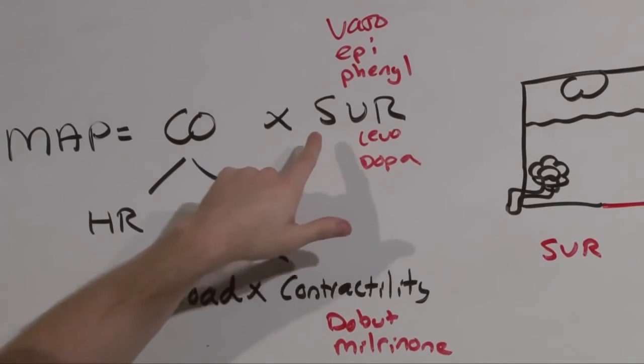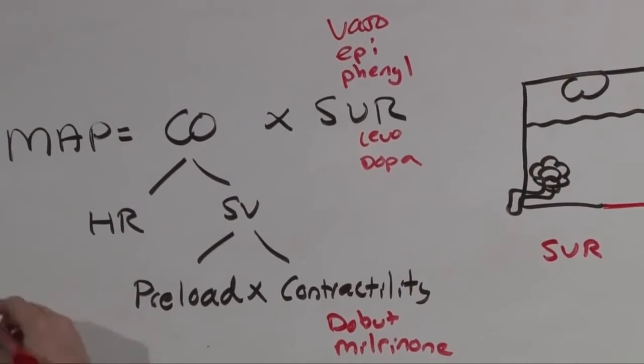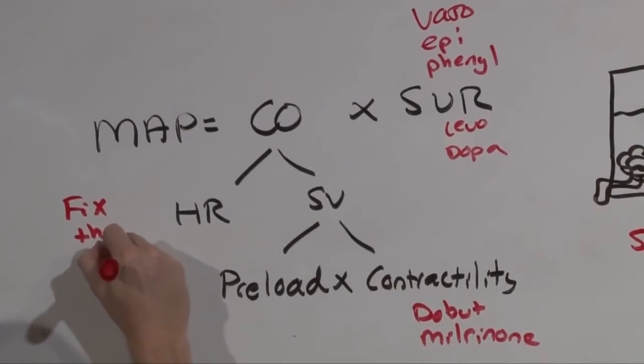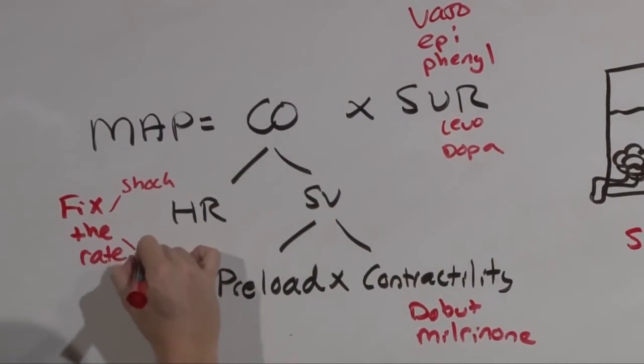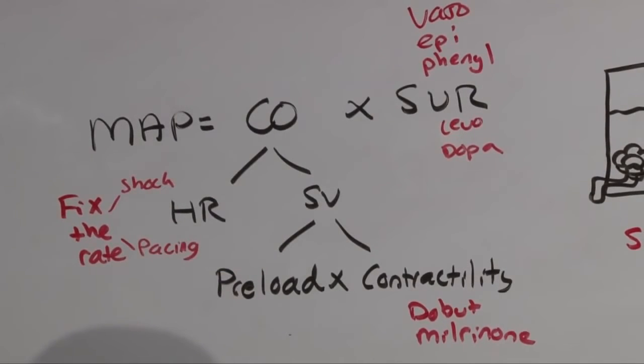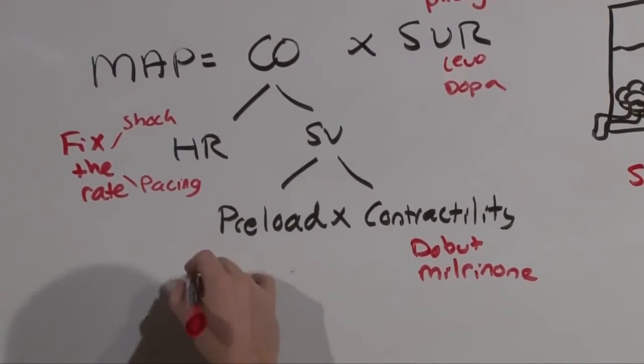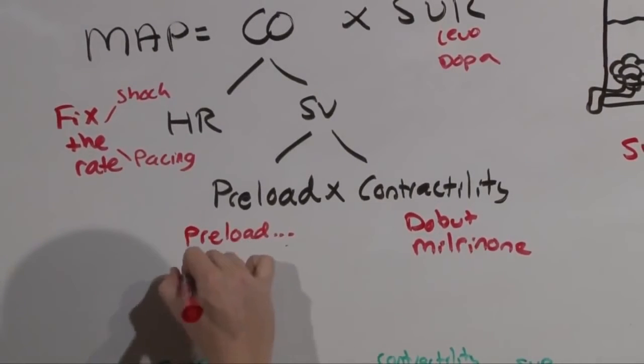So what then do we do when they're in shock and have a problem with their heart rate? That should be obvious. You fix the rate. And as we learned in the first video, that either means shocking fast rhythms or pacing slow ones. And if they have problems with preload, what do you do? You give them preload. And then remove the obstruction.